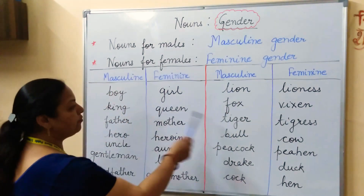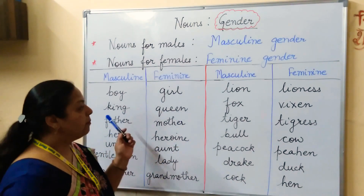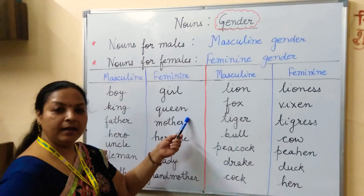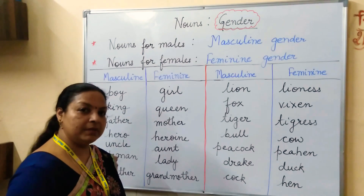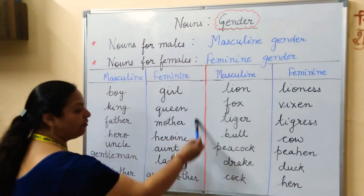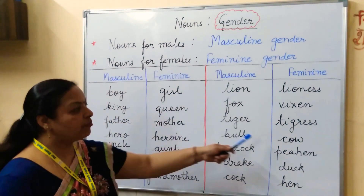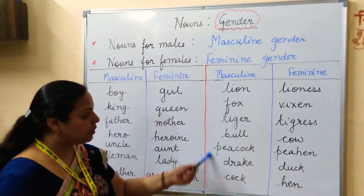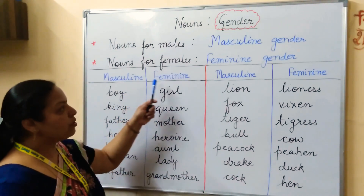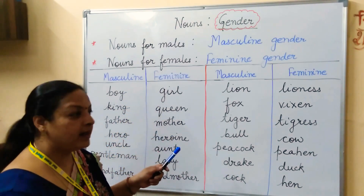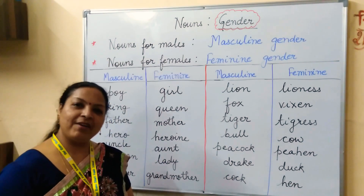What is common in all of these? These are all living beings. Masculine and feminine gender apply only to living beings, whether persons or animals. Moreover, one more clue for feminine gender is that they can give birth to babies, while masculine gender cannot. This was all about masculine and feminine gender. I hope you have understood today's topic. Have a nice day.